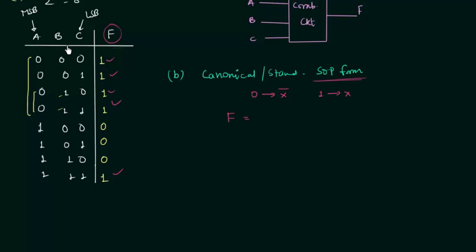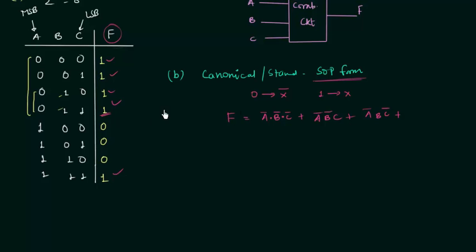For the first case A is 0, B is 0, C is 0, so we write A complement AND B complement AND C complement. For the second case 0,0,1: A complement AND B complement AND C. For the third case 0,1,0: A complement AND B AND C complement. For the fourth case 0,1,1: A complement AND B AND C. And for the last case all three are 1, giving A AND B AND C. This is the canonical SOP form with all variables in normal or complemented form.